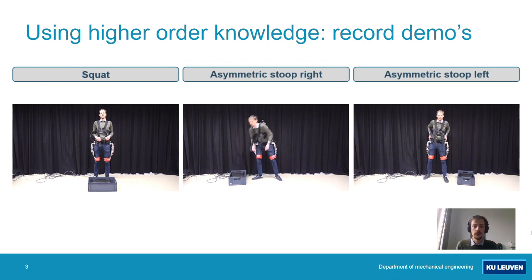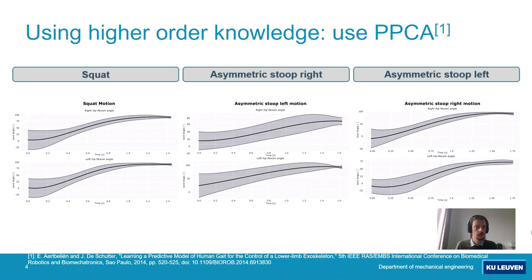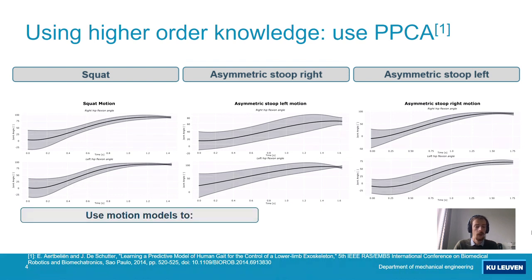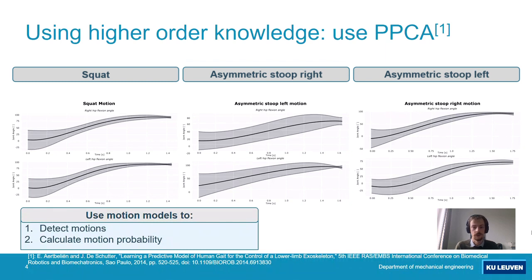Next, using a technique called PPCA, or Probabilistic Principal Component Analysis, I transformed these demonstrations into motion models. The black line in the figures is the mean of the demonstrations, while the grey area indicates the variance in the demonstrations. The exoskeleton then uses these motion models in the database to detect ongoing motions, as well as calculate the probability of ongoing motions.